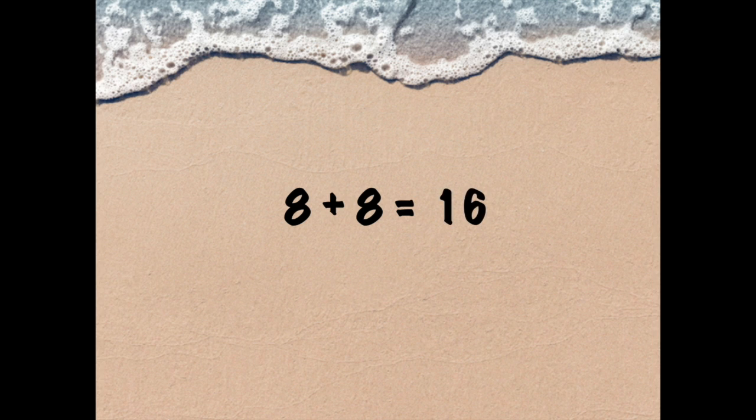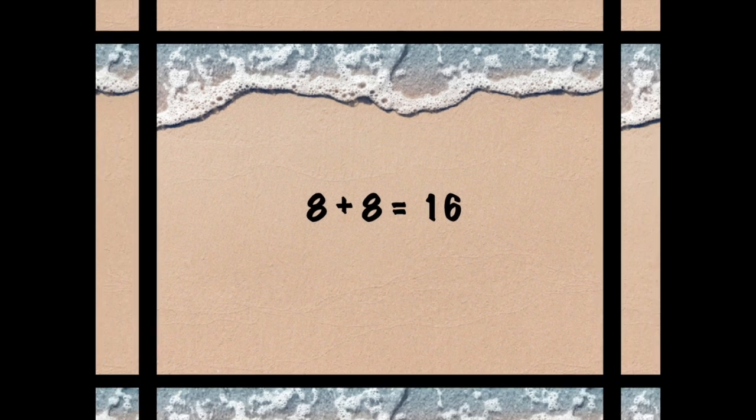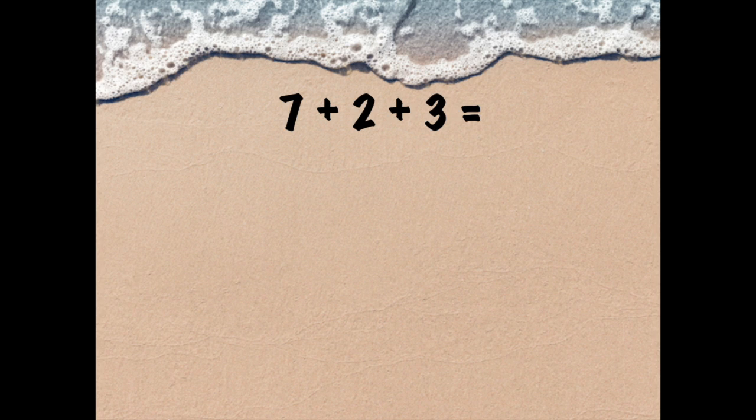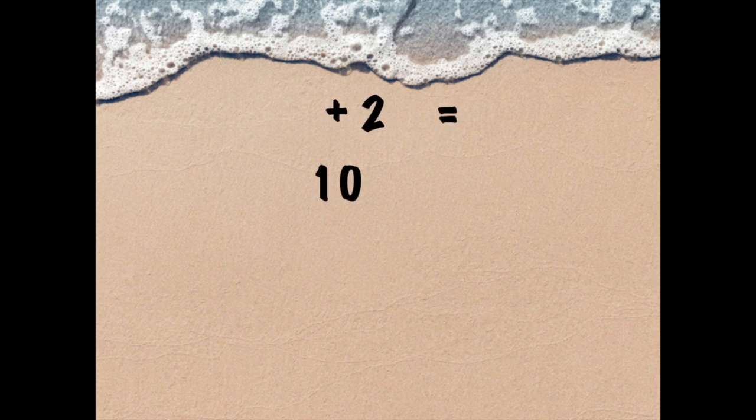Let's try another problem where we add up three numbers. Our equation is 7 plus 2 plus 3 equals what. Different ways could I solve this problem. I could start by adding together 7 and 2, or 2 and 3, or 7 and 3. What two numbers would you add together first? Well, I know 7 and 3 makes 10. That's an easy one for me to solve. Now my new equation is 10 plus 2 equals.